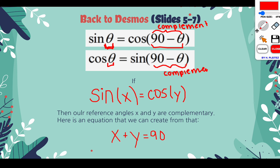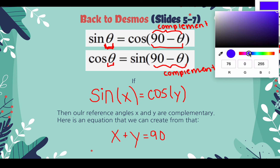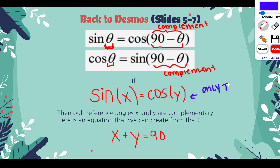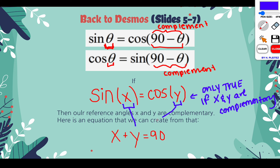Now how can we utilize this? We might have equations given to us like sine of X equals cosine of Y. If we're given something like this, this is only true if X and Y are complementary. Complementary means they add to 90. So if you're looking for a variable, this is only true if this angle plus this angle equals 90.